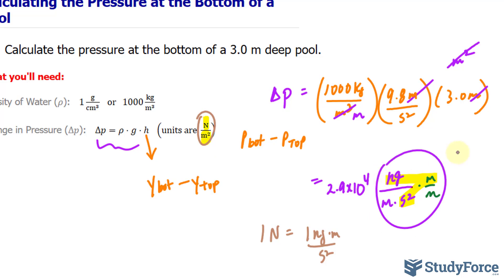Therefore, rather than all of this, we can simply write down newtons per meter squared. And that's also the same as a pascal, so you can write down Pa instead.